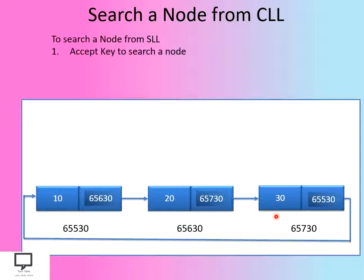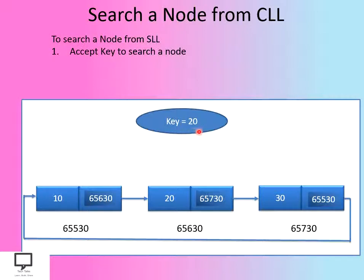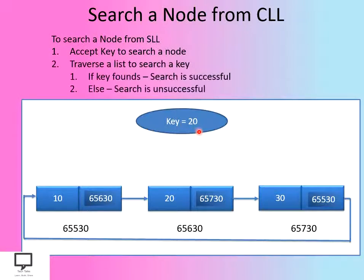To search a particular node, first of all we are supposed to accept a key from the user — the value we want to search in the Circular Linked List. I am accepting a key, which is 20, that I want to search. If the key is found, search is successful; otherwise, search is unsuccessful.